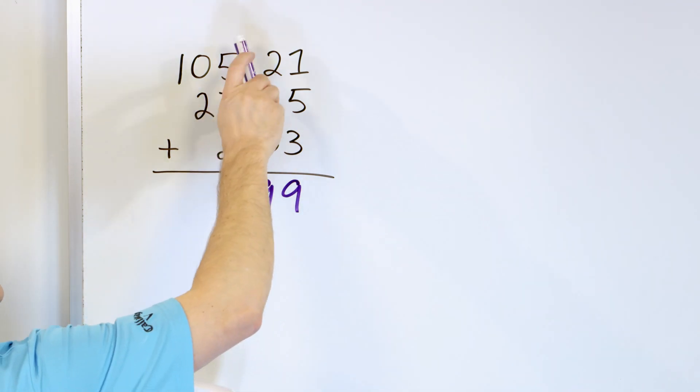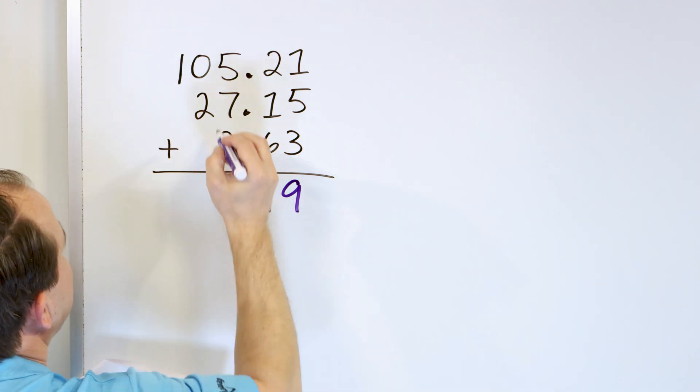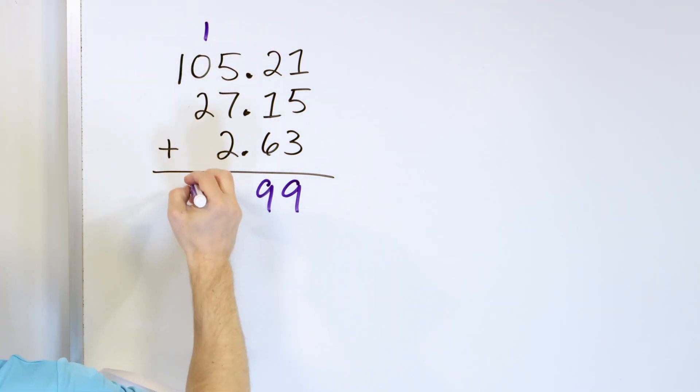6, 7, 8, 9. 9 goes in this column. Then we have 7, 8, 9. So, we have 9 plus 5. We know that that's 14. 10 plus 5 is 15. So, 9 plus 5 is 14. Carry the 1. 2 plus 1 is 3, and the 1 just falls down. And then the decimal also falls down. And what do we have? 134.99.